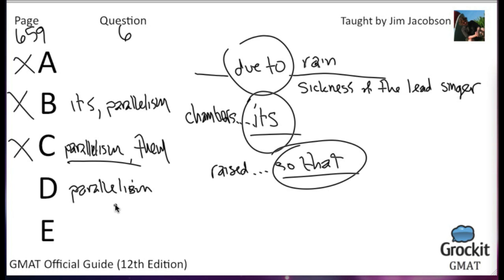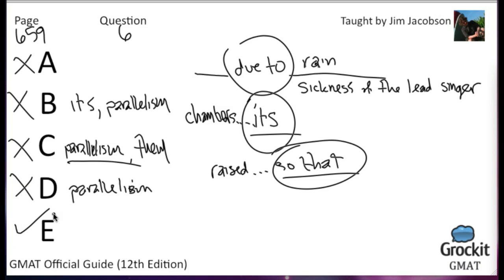Choice E by process of elimination: 'Because moisture exhaled by tourists had raised the humidity within them to such levels that salt from the stone was crystallizing and fungus was growing on the walls.' It has the correct parallelism — 'was crystallizing and was growing.' It uses 'because' instead of 'due to.' The 'within them' phrase is part of the same clause referring back to the chambers as the subject. And it correctly refers to the chambers as 'them' rather than 'its.' Choice E is correct.